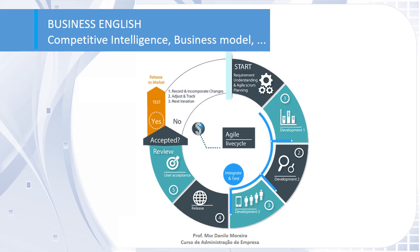The Agile process begins with clients describing how the end product will be used, clarifying customer expectations to the product team. Then the team cycles through a process of planning, executing, and evaluating. Continuous collaboration is key during this fast process. In the Agile life cycle, you start with requirements understanding and planning, then three phases of development composing the integrate-and-test phase, then release, then user acceptance. If accepted, the product is released to market; if not, adjustments are made and the next iteration begins.